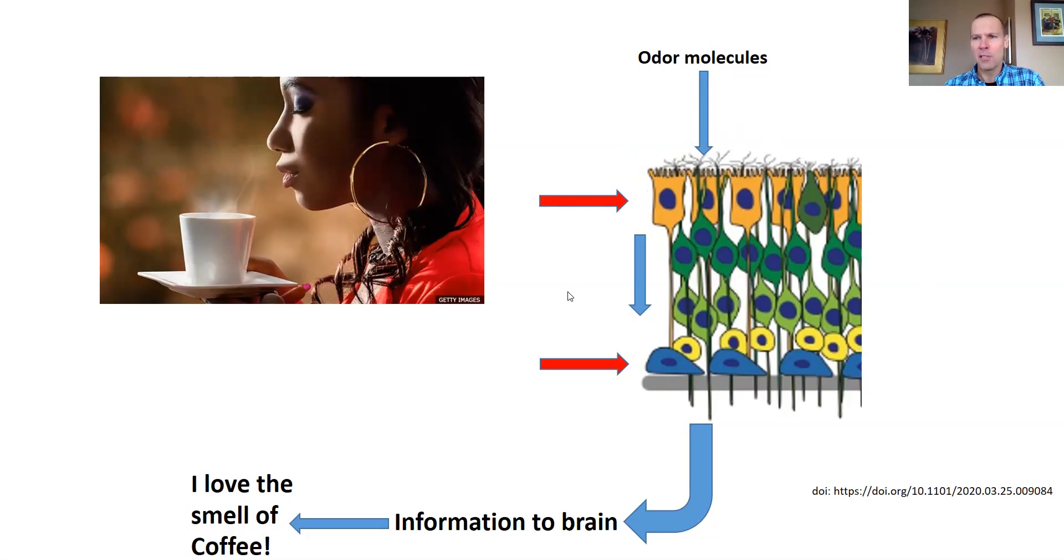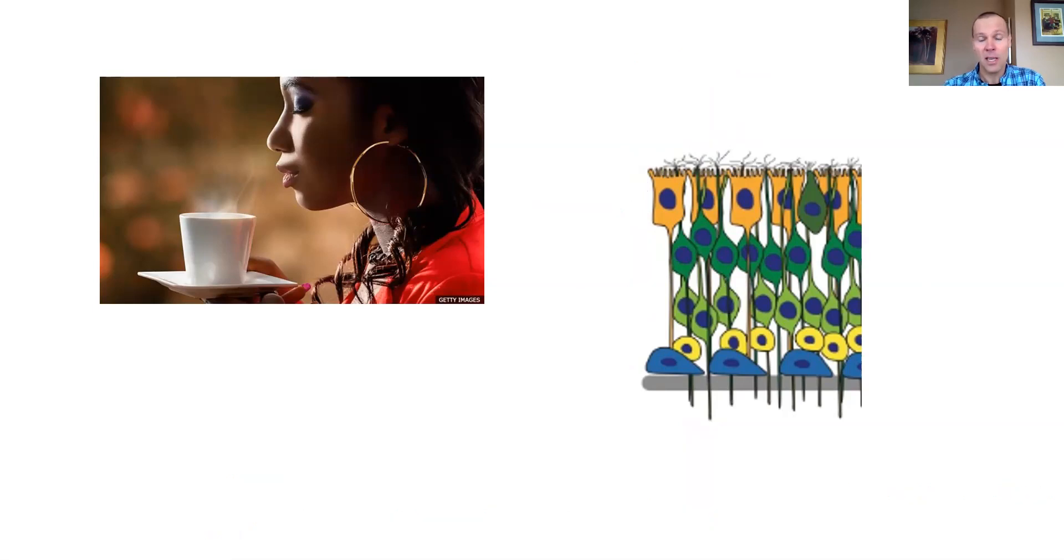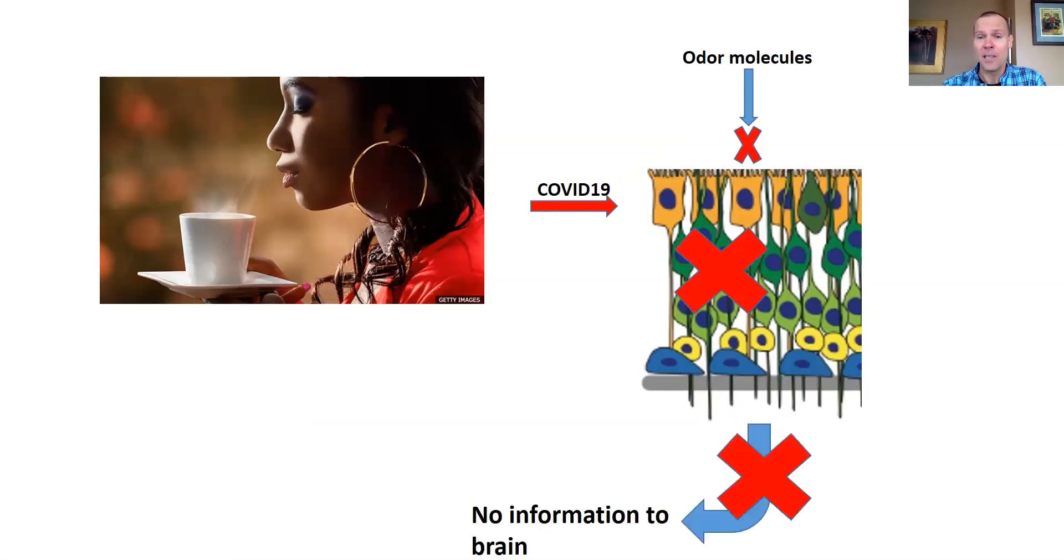So being good scientists, they proposed a mechanism. Once again, this is not a proven mechanism at this point, this is their working model. What they think happens is when these support cells get infected by COVID-19—they can be infected because they have the ACE2 receptor—that disrupts the cilia. And they do have evidence for that based upon coronavirus studies in rodents. When the cilia are disrupted, the odor molecules can't bind. No odor molecules bind means that the neurons don't get activated, which means no information goes to the brain, and you can't smell the coffee.